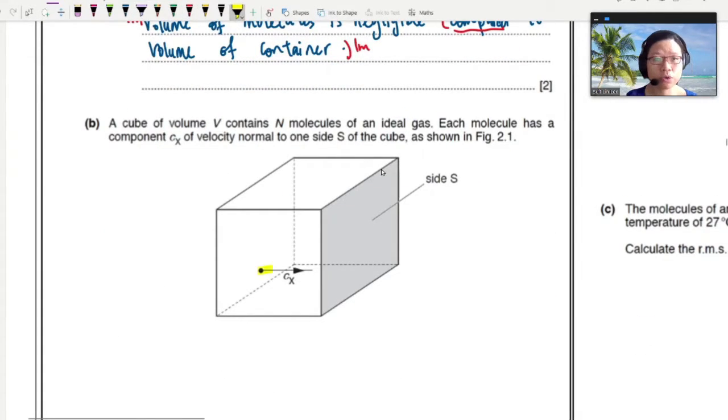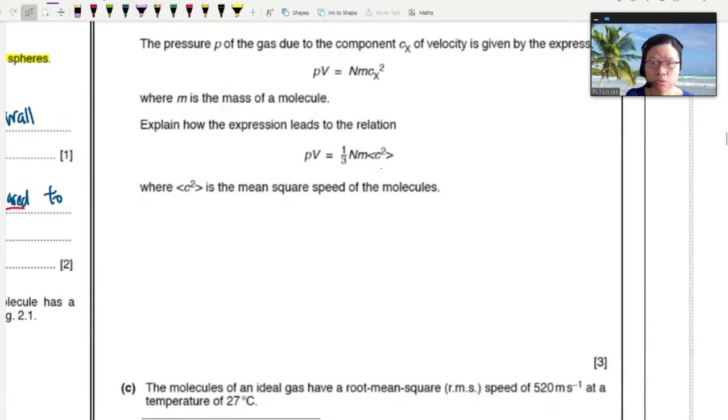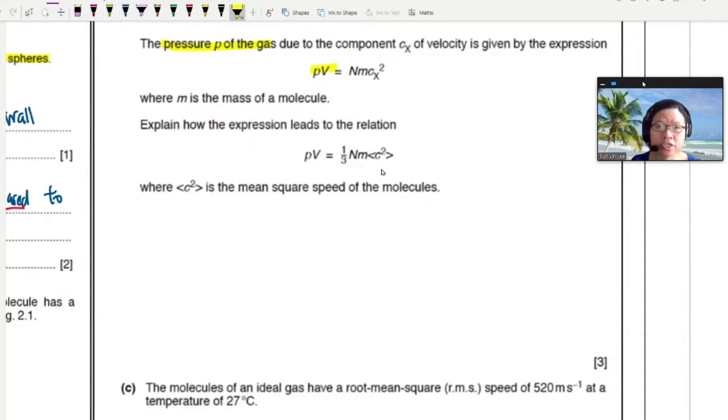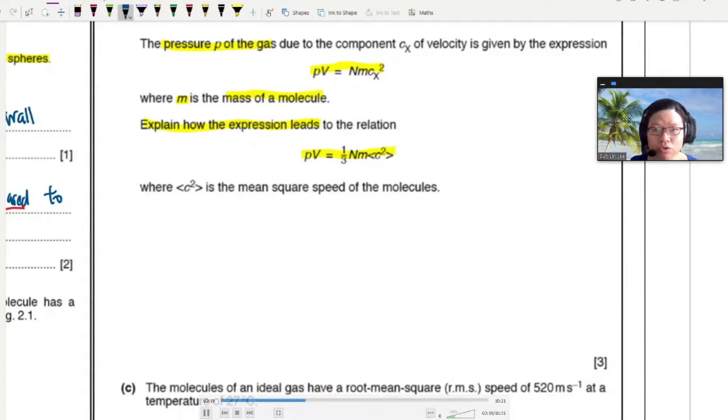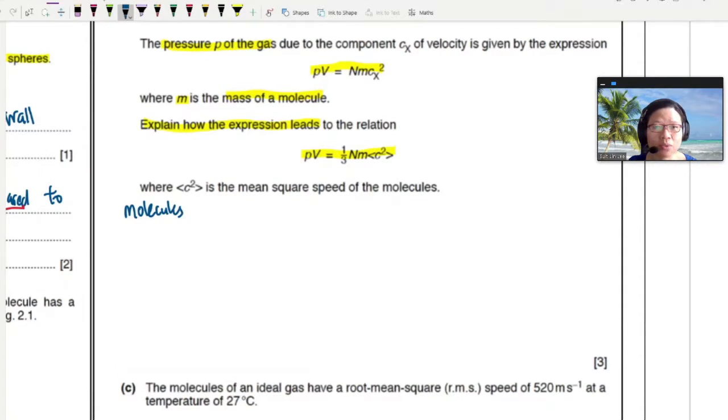This is the good old diagram that we looked at in our theory video. You have a particle traveling at CX about to collide with one side of the container. You can see here that it says that the pressure of the gas P due to the component CX is given by this expression. Explain how this can be written to one third NMC squared. So this is another small part of the proof that they want from you.